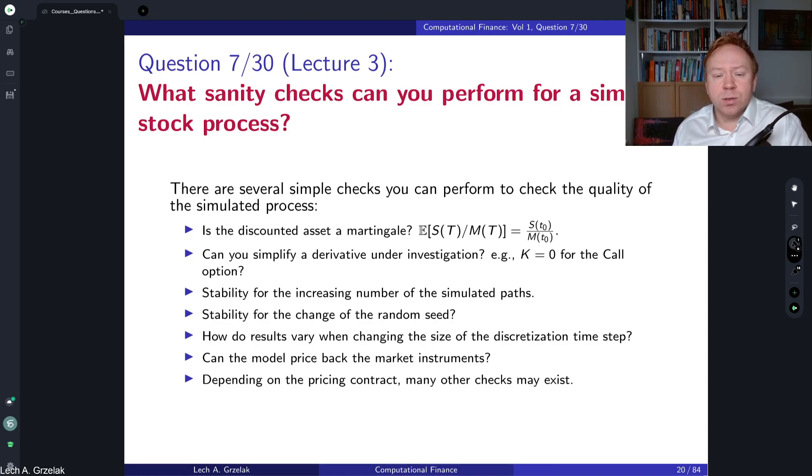So to answer this question, there are multiple steps that we can take a look at. The first one is related to the particular asset class we are simulating. For example, if we have a simulated stock St, then a simple check what we can do is that if we discount this stock, so it's a martingale property.